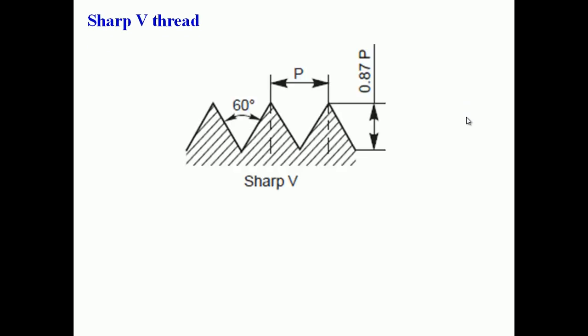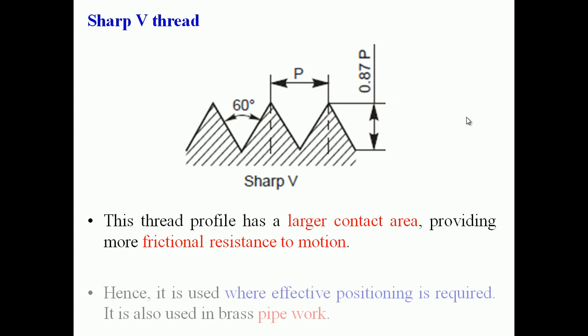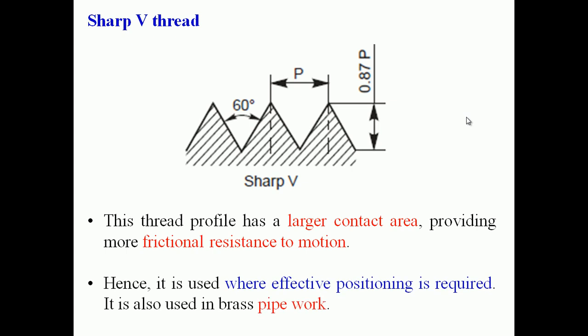The short V thread has an included angle of 60 degrees and a depth of 0.87 times the pitch, with a sharp corner. It has a larger contact area and provides more frictional resistance, making it useful for effective positioning. It is used in brass pipe work.